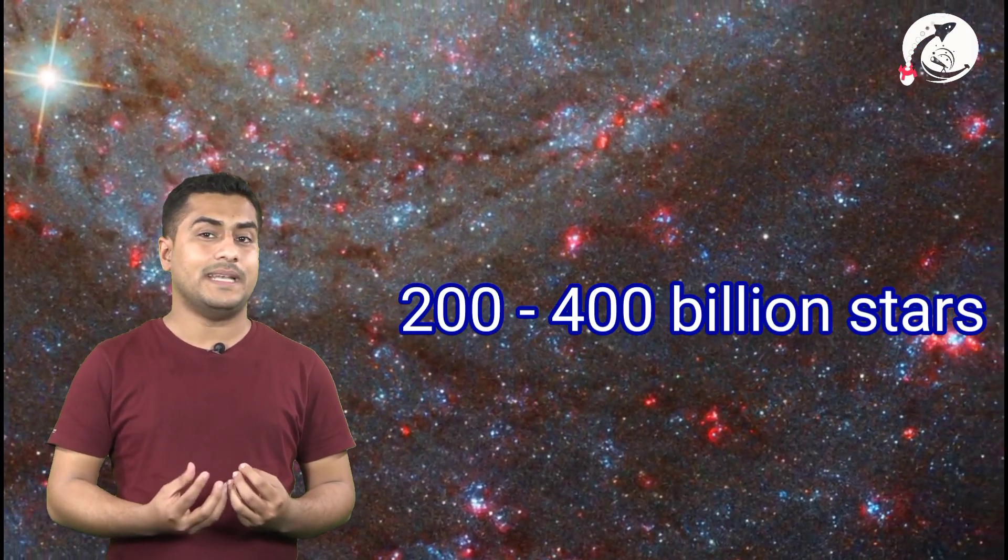These type of galaxies contain lots of gases and dust. Dust and gases are the major ingredients for forming a young star. Therefore, in such type of galaxies, there are more young stars than the older ones. That's why spiral galaxy looks brighter than the other galaxies. Such type of galaxies contains nearly 200 to 400 billion stars.